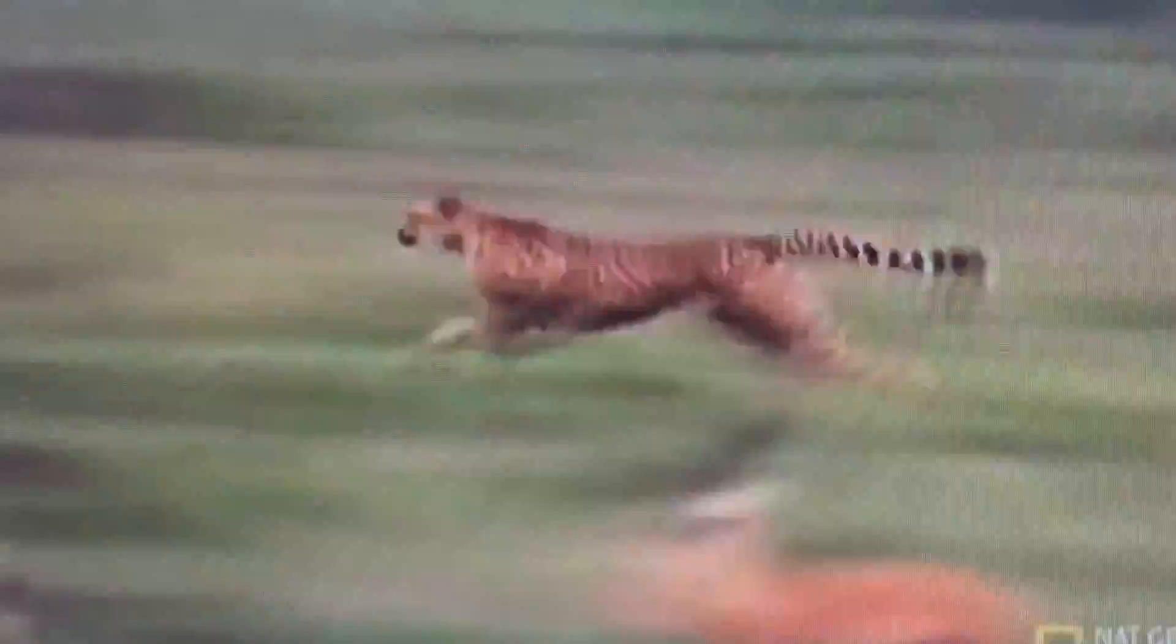Cheetahs are able to maintain their top speed of 110 kilometers an hour for just 17 seconds. If they run for any longer, their body temperature can reach a brain frying degree of 104 degrees Fahrenheit, which can cause them to collapse or even die.